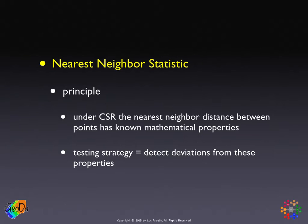We have our points. We can either compute the distance from each event to the closest other event, or we can put a grid over the point pattern. For each of the reference points, we compute the distance to the nearest event. This gives us, for every event, a nearest distance which has a distribution that we can characterize, and for every reference point, the distance to the nearest event, which also has a distribution we can characterize.